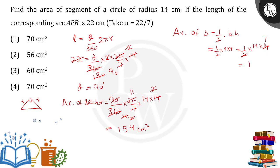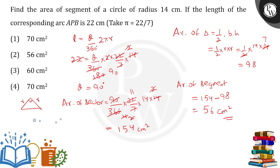Now the area of the segment is required. Area of segment equals area of sector minus area of triangle, that is 154 minus 98, which comes out to be 56 centimeter square. This matches option number B, and that is the answer.